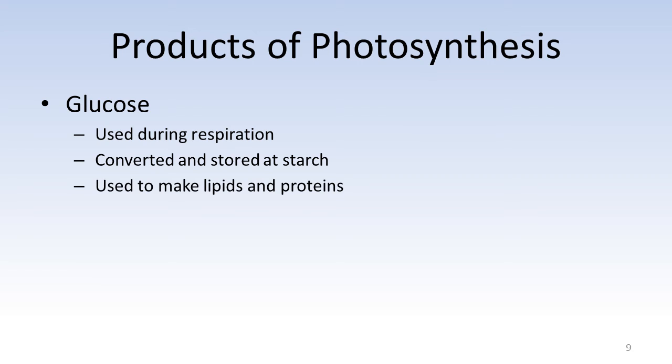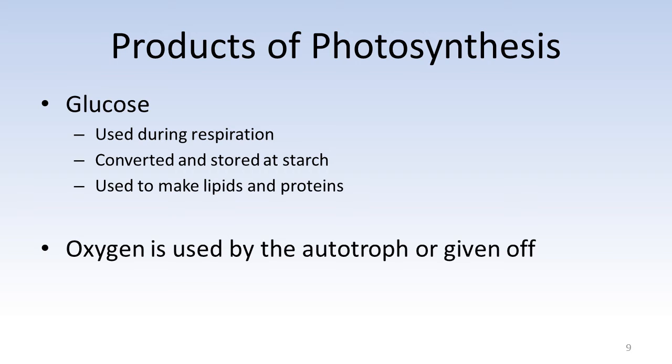Furthermore, the glucose can be used in the manufacture of lipids and proteins in the plants. The oxygen made during photosynthesis can be used by the plant for aerobic respiration, while the excess oxygen will be given off through the stomata of the leaves.